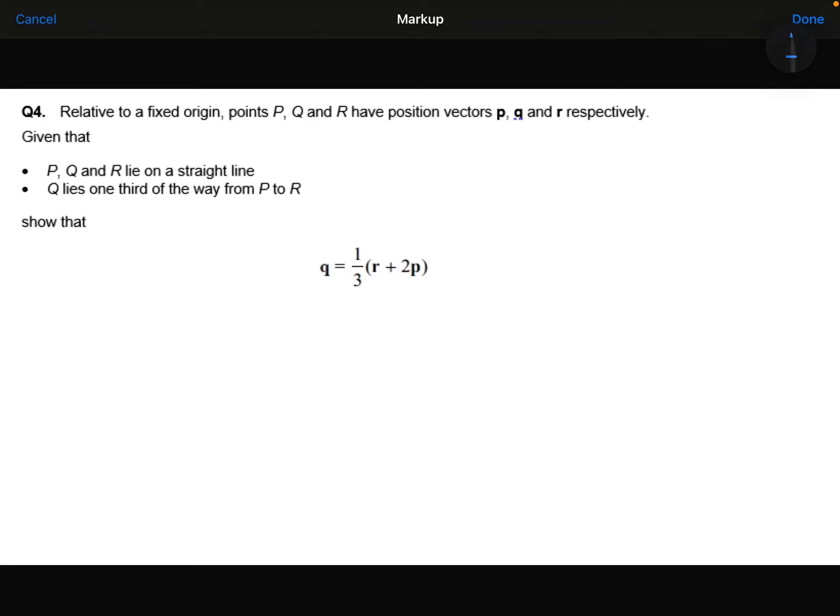Relative to a fixed origin, the points P, Q and R have position vectors p, q and r respectively. Given that P, Q and R lie on a straight line and Q lies one third of the way from P to R, show that q equals one third r plus 2p.